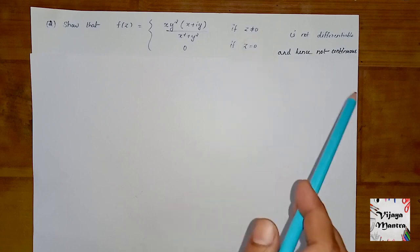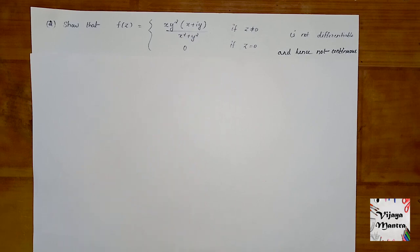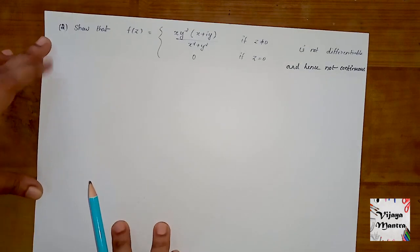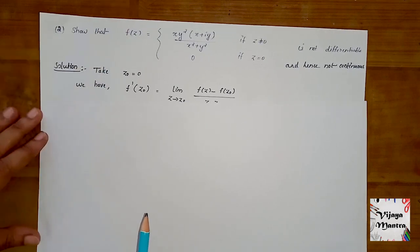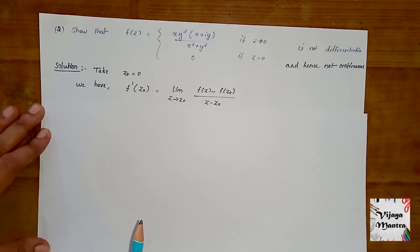To check if it's not differentiable, we need to check the differentiability and continuity. Except at z = 0, where z₀ = 0, then f(z) = xy²(x + iy) / (x² + y²).